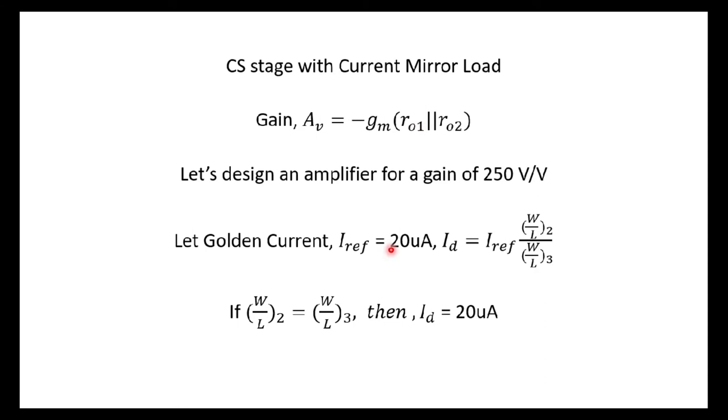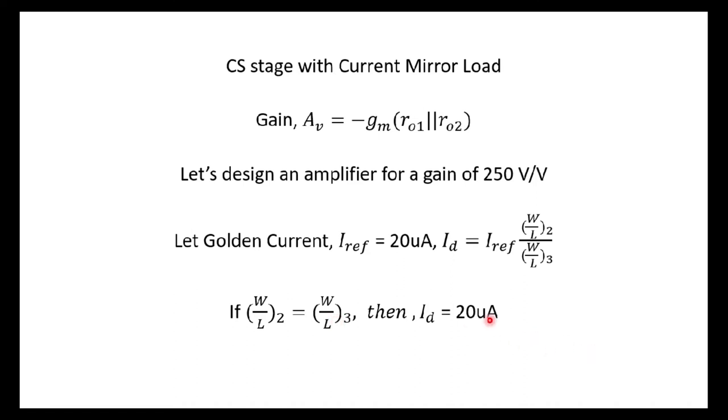Let the golden reference current, as I have shown in the LTSpice schematic, let it be 20 micro amperes. So the drain current of the transconductance MOSFET is going to be I reference, which is this current, times the aspect ratios of the MOSFET, second and third MOSFET. Since we have same aspect ratios for both the PMOS, we have our drain current as 20 micro amperes.